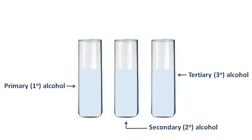In this tutorial we will discuss the Victor Meyer method to test primary, secondary, and tertiary alcohol. Let's take three test tubes containing primary, secondary, and tertiary alcohol. These alcohols all have the same color, so it's hard to say which one is which alcohol by just looking.